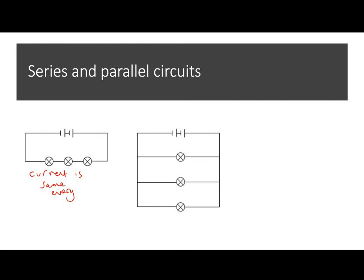In the series circuit, the current is the same everywhere — that's our main observation. In the parallel circuit, the current is not the same everywhere; it is split between the different branches. That's one key observation we should have picked up.